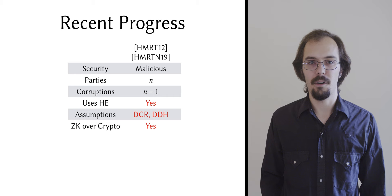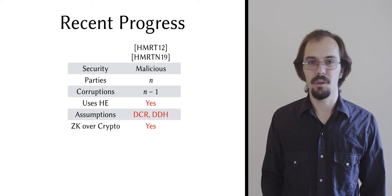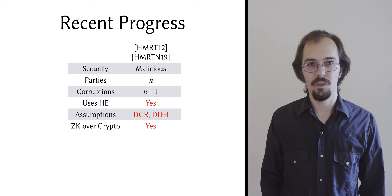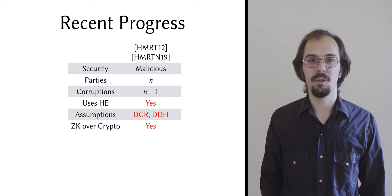Furthermore, proving statements about Paillier and El-Gamal ciphertexts in zero-knowledge is very expensive. Even without the zero-knowledge proofs, in semi-honest mode with two parties, they report taking no less than 15 minutes to sample a bi-prime, mostly due to the computational cost of homomorphic encryption.